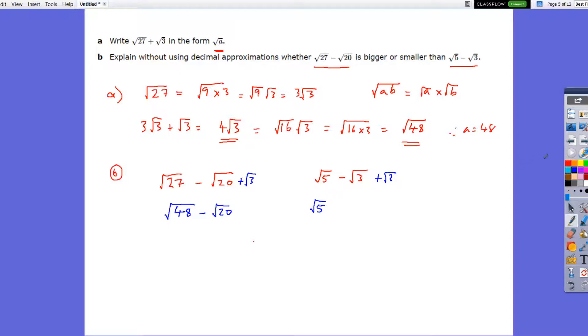Now, what I could now do is the same process, and I could add root 20 to both sides. So I'll add root 20 to this number. And I'll add root 20 to this number. Well, root 20 plus, minus root 20 plus root 20, they will cancel. So on this side, I'm going to be left with root 48.